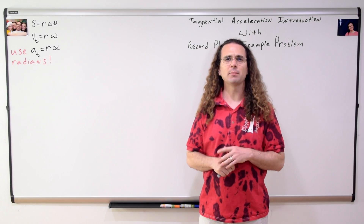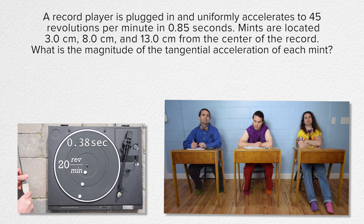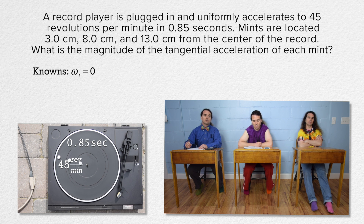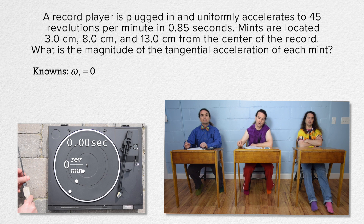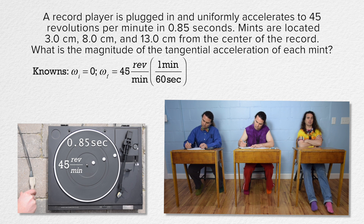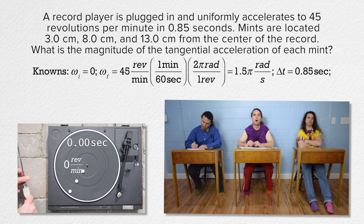Let's do an example problem. Bobby, could you please read the problem, and Bo, could you please translate? A record player is plugged in and uniformly accelerates to 45 revolutions per minute in 0.85 seconds. Angular velocity initial is zero because the record player starts out at rest. The final angular velocity is 45 revolutions per minute, which we need to convert to radians per second: multiply by 1 minute over 60 seconds and 2π radians over 1 revolution to get 1.5π radians per second. Change in time is 0.85 seconds.